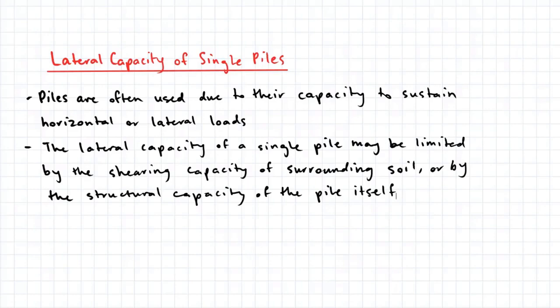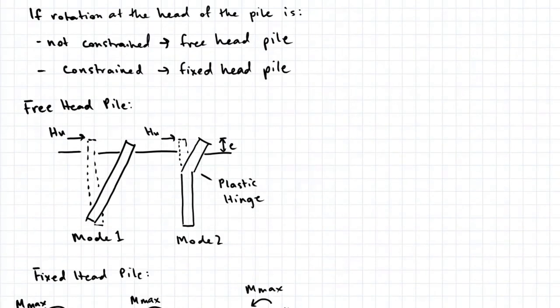If the rotation at the head of a pile is not constrained, this is known as a free head pile. If the rotation of the head is constrained by the pile cap, the pile is called a fixed head pile.